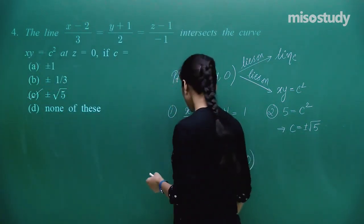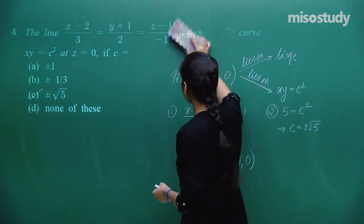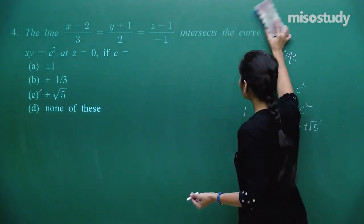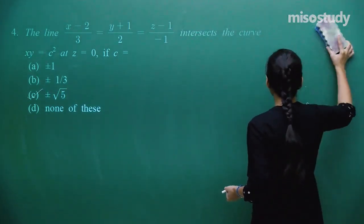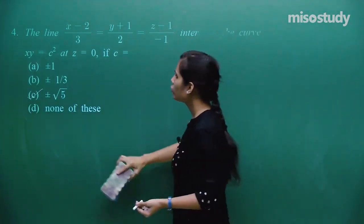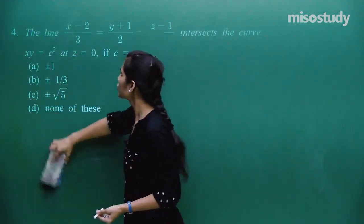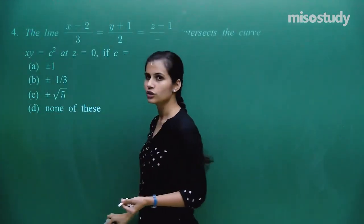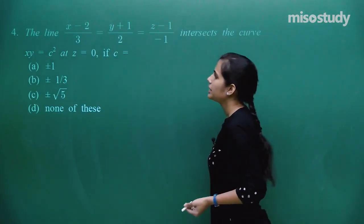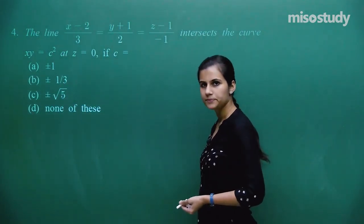Since the point (5,1,0) also lies on the curve xy = c², substitute x=5 and y=1: 5×1 = c², so c² = 5, giving c = ±√5. The line gives the point coordinates, which are then plugged into the curve equation to find the unknown constant c.